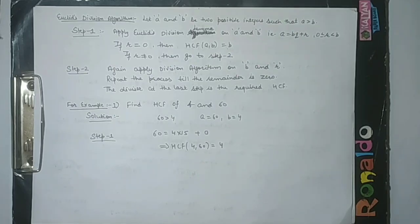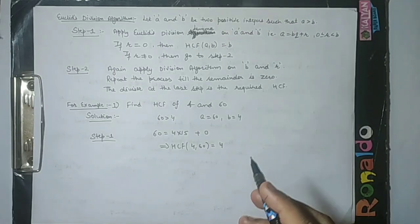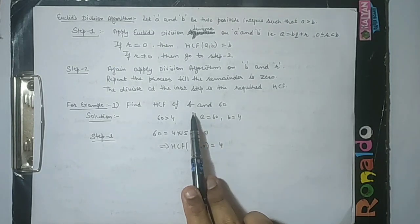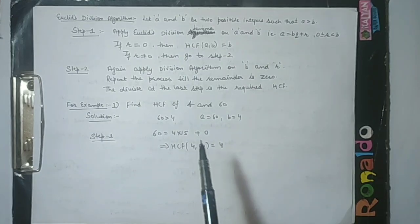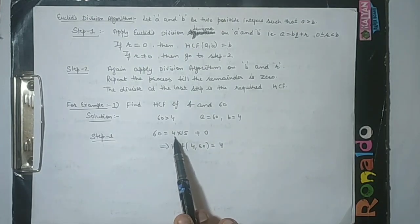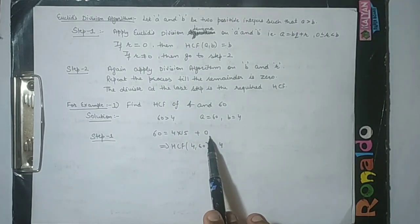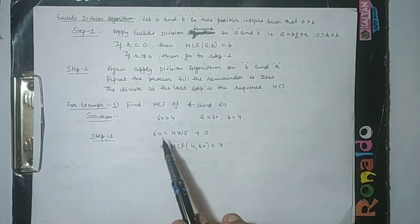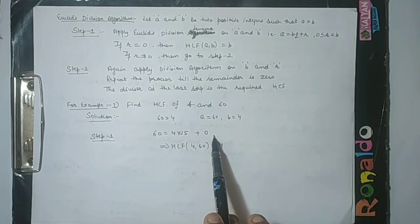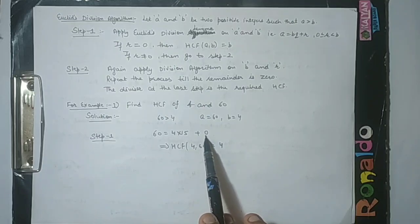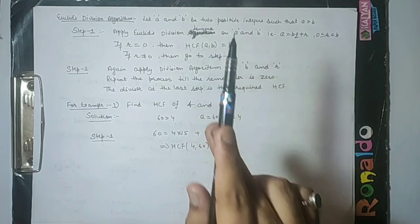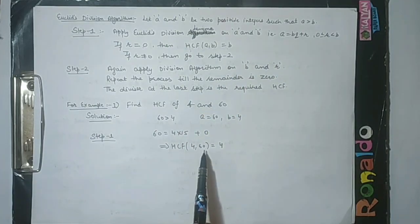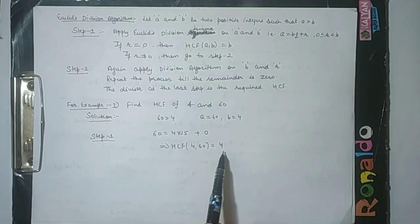Let us understand this by taking an example. We have to find HCF of 4 and 60. We can see that 60 is greater than 4, so we will take a as 60 and b as 4. If we divide 60 by 4, the quotient is 15 and the remainder is 0. So we can write 60 equal to 4 into 15 plus 0. Since r is equal to 0, the HCF is the smaller number, that is 4.